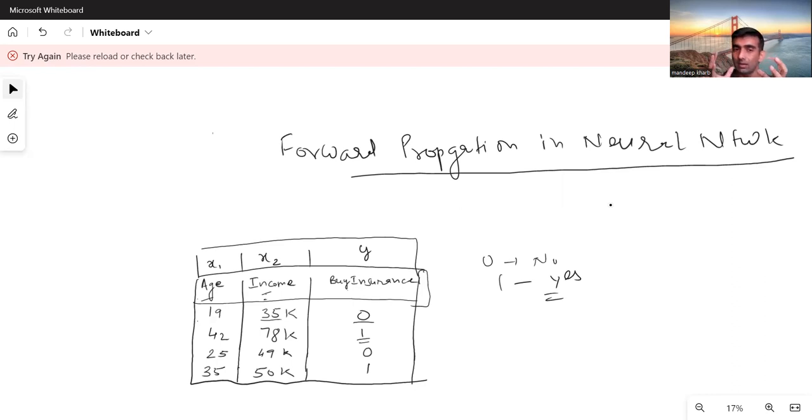This is a kind of classification problem. Basically, we want to build a model which can be trained over this data, and after training it can predict whether a particular person will buy insurance or not. So this is our idea and context.